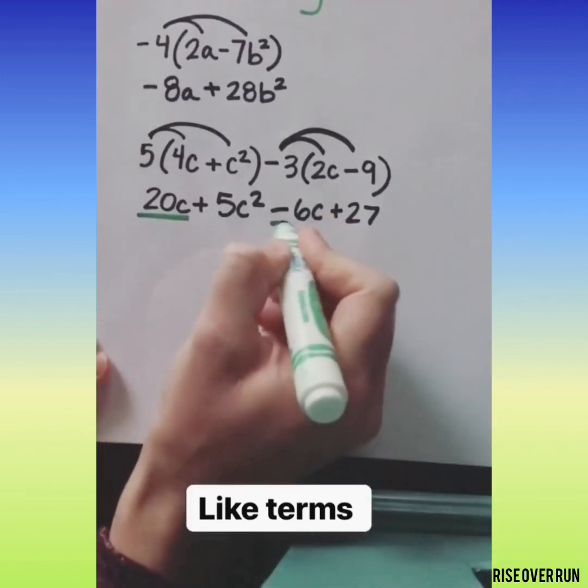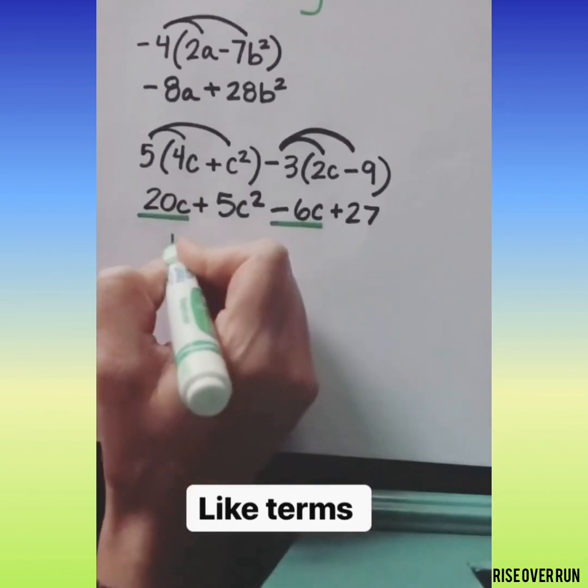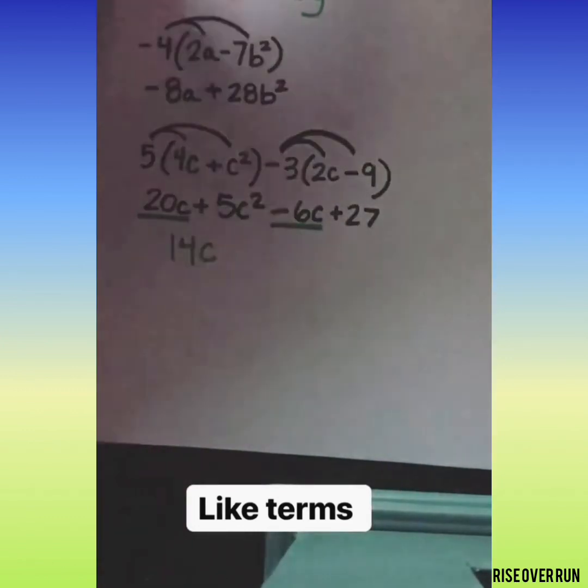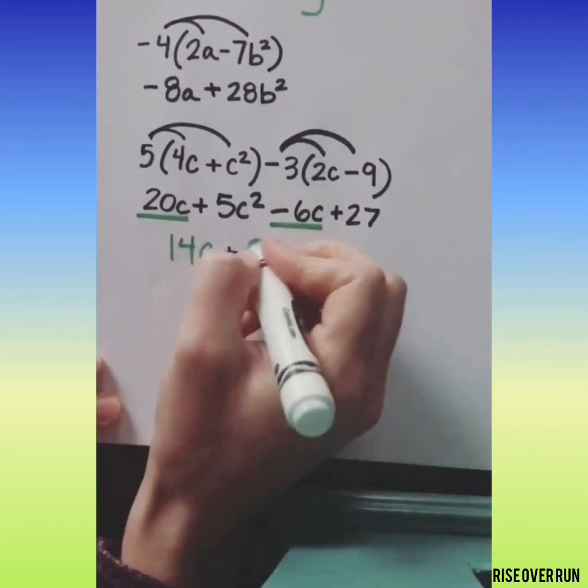Now let's see if we have any like terms. We have a 20c over here and a negative 6c here. So we'll do 20 minus 6 to get 14c. These are not like terms so let's just bring them down.